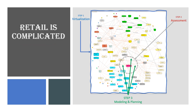Who'd ever think retail is this complicated? This is a model of the systems in retail and their interconnections. It is one of the foundations of the IVROM model. If you click on any icons, you will drill down to the areas that relate to that icon. You will see more of these relationships later.